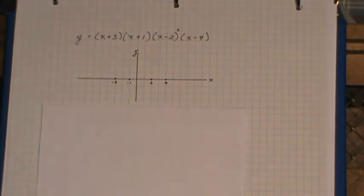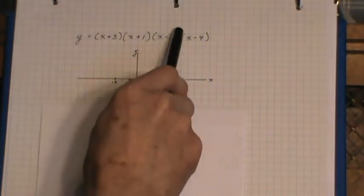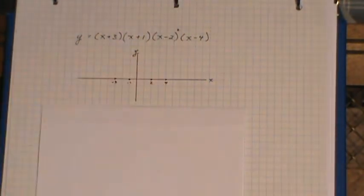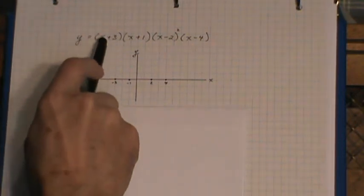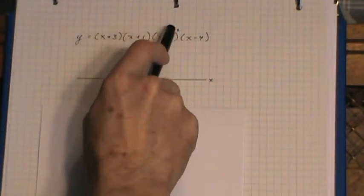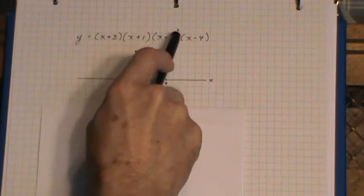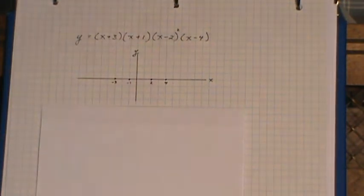Now, in this one, I have a square on this particular factor, which means I don't cross at that value 2. I'm going to bounce there. So once again, I look at x times x times x times x again because it's squared. This is actually a 5th power. The important thing about it is that the leading term x to the 5th is positive,